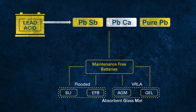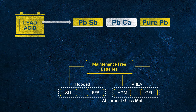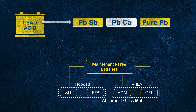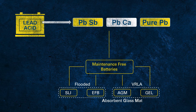AGM stands for absorbent glass mat, which indicates the main technological difference to a flooded battery. In this kind of battery, the electrolyte is no longer free but fixed, absorbed in a glass mat separator. Each cell of an AGM battery is sealed from the environment, and every cell is equipped with a separate valve to release potential unwanted overpressure to avoid permanent damage. This construction and function principle provides higher performance and reliability than a flooded battery ever could.